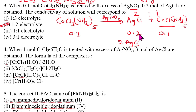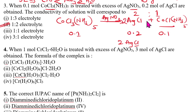When 2 Cl ions undergo precipitation to form 2 mols of AgCl, the meaning is that 2 Cl⁻ ions are outside the coordination sphere. Hence the complex is [CoCl(NH₃)₅]²⁺ · 2Cl⁻, making it a 1:2 or 2:1 electrolyte.